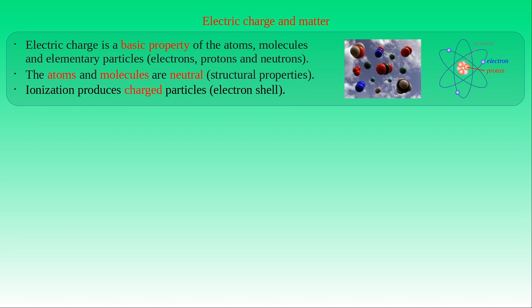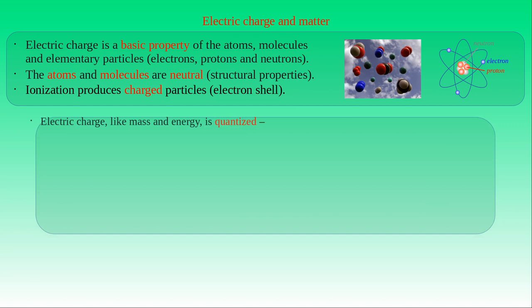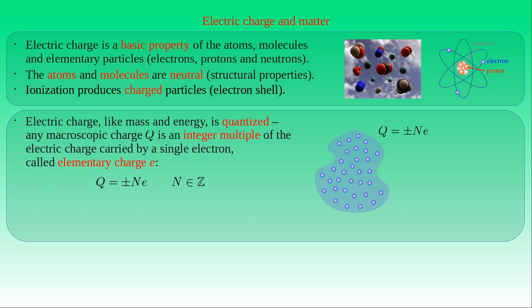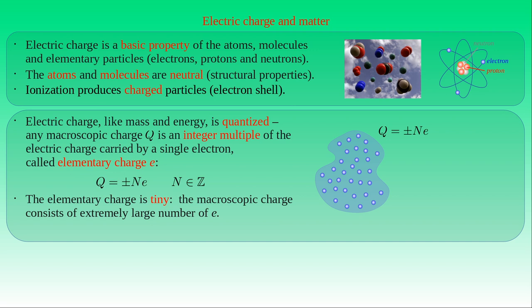What are the properties of electric charge in such a model? Electric charge, like mass and energy, is quantized. Any macroscopic charge Q is given by an integer multiple of the electric charge carried by a single electron, called the elementary charge e. We can write the charge Q as plus or minus n times e, where n is an arbitrary integer number and the signs indicate whether the charge is positive or negative. Since the elementary charge e is tiny, every macroscopic charge Q consists of an extremely large number of elementary charges, allowing us to regard the macroscopic charge as a continuous quantity.